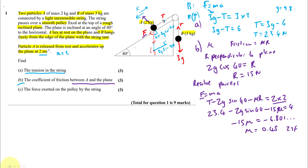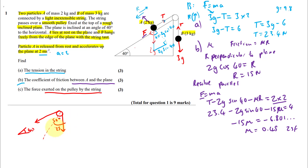Now for part (c): the force exerted on the pulley by the string. The angle at the bottom of the triangle is 40 degrees, so the angle at the top is 50 degrees. Splitting that into two equal angles gives 25 degrees on each side. Combining the two tension forces acting on the string: T cos 25 plus T cos 25 = 42 newtons to two significant figures.